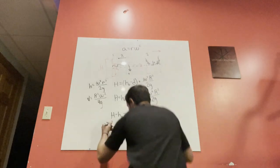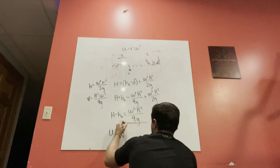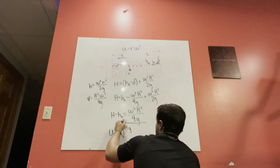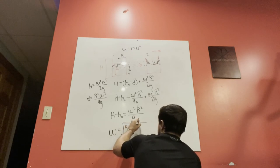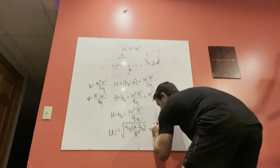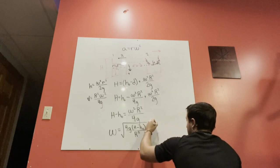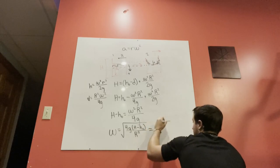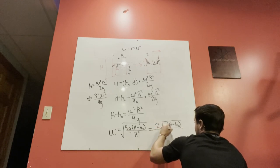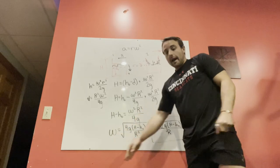Solving for angular velocity: ω² = 4g(H − h_naught)/R², so ω = 2√(g(H − h_naught)) / R. This is our final expression for the maximum angular velocity at which you can spin the cup without the liquid spilling over.